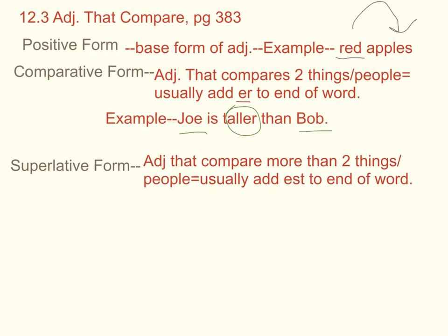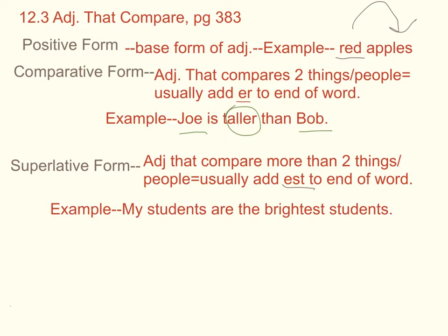The third type of adjective is the superlative form, where adjectives compare more than two things or people, and you usually add -est to the end of the word. Example: my students are the brightest students. I'm comparing my students to all 6th graders. Time to pause the video and jot down your terms and labeled examples.